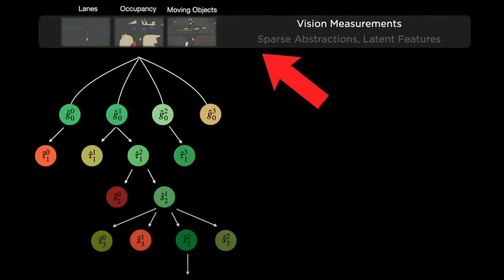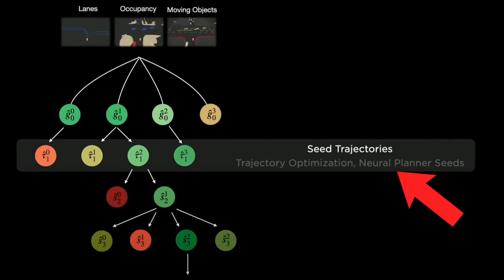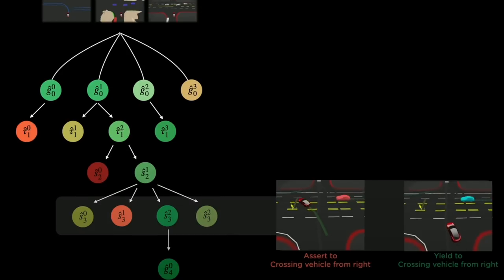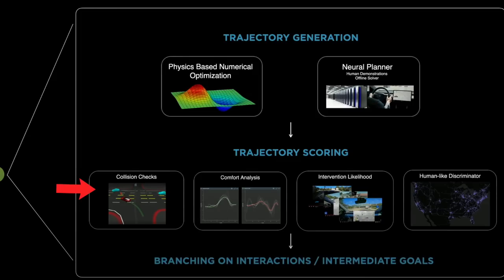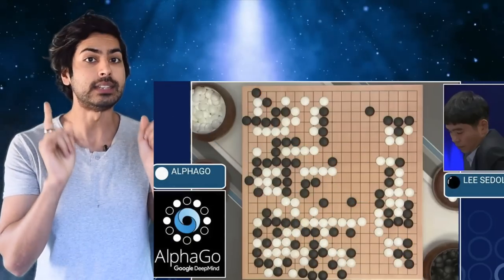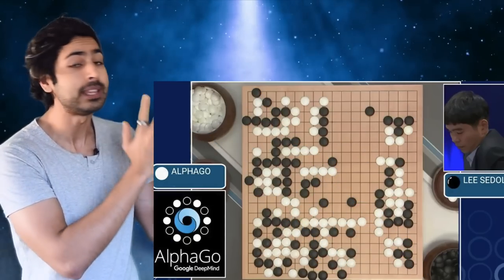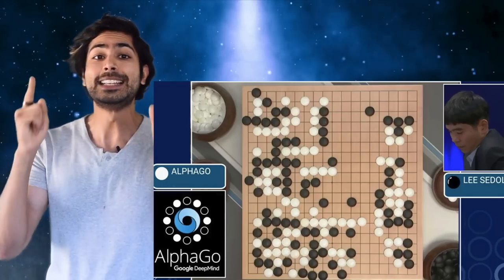This parallelized tree search starts with a set of vision measurements, namely lanes, occupancy, and moving objects. From this, they create a set of goal candidates for lanes and unstructured regions. Then they initialize seed trajectories. At each layer of the tree search, the car has more constraints into what its possible interaction space could be. They score each trajectory based on a few variables, like collision checks and intervention likelihood, and eventually converge on one optimal path. This deep reinforcement learning technique is similar to DeepMind's AlphaGo, which beat the human champion. So if anyone tells you deep RL is never used in the real world, tell them they're wrong.